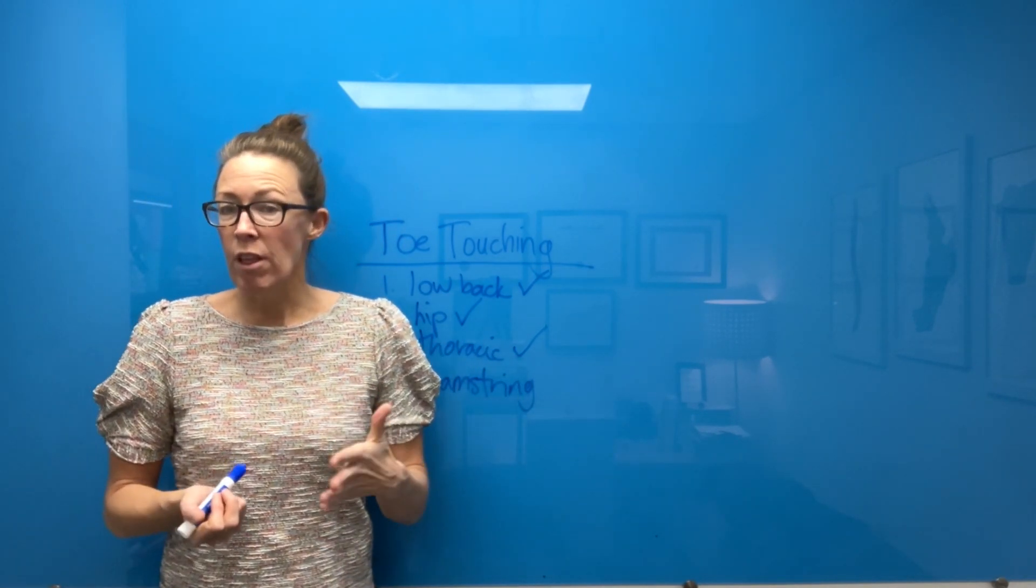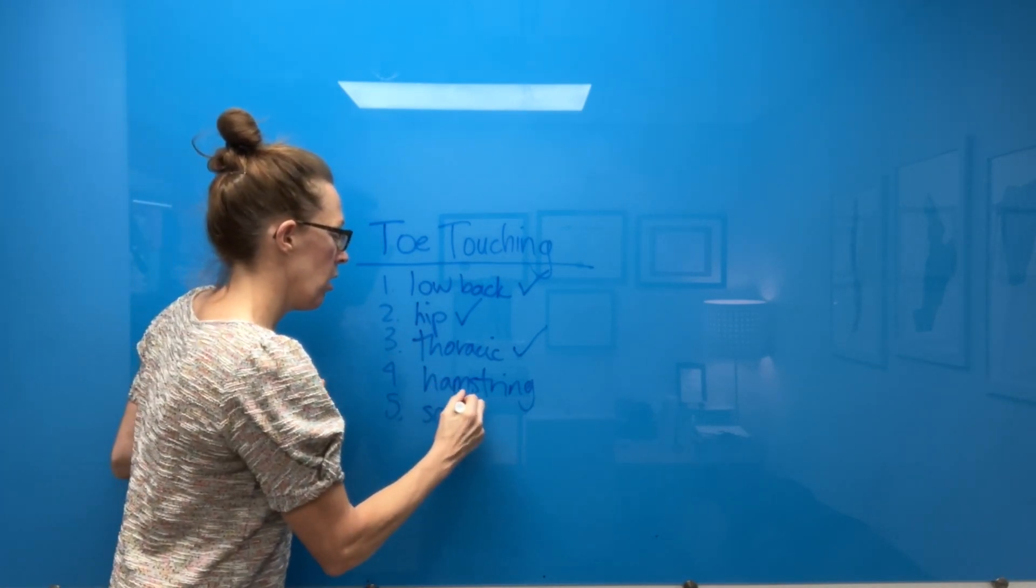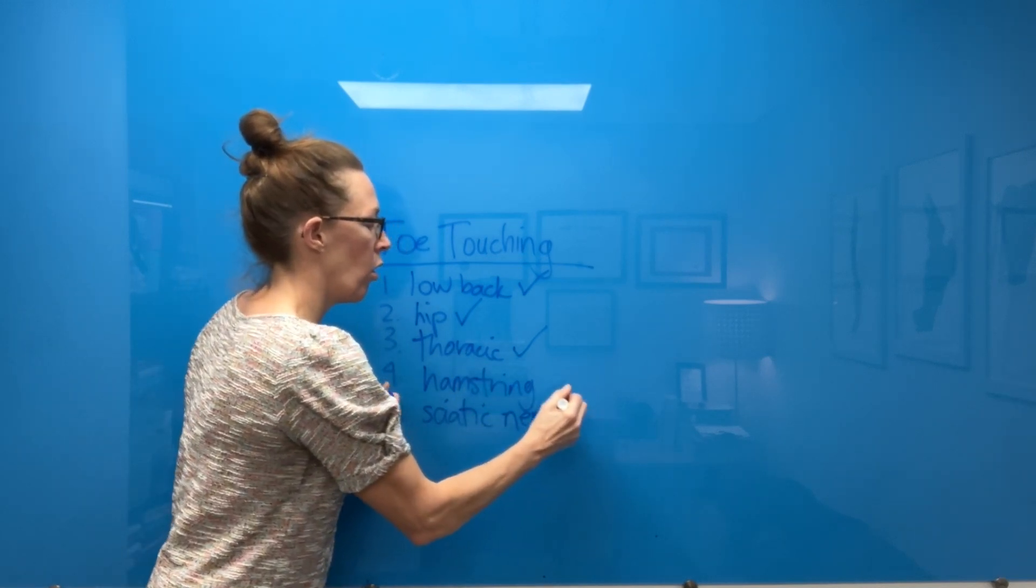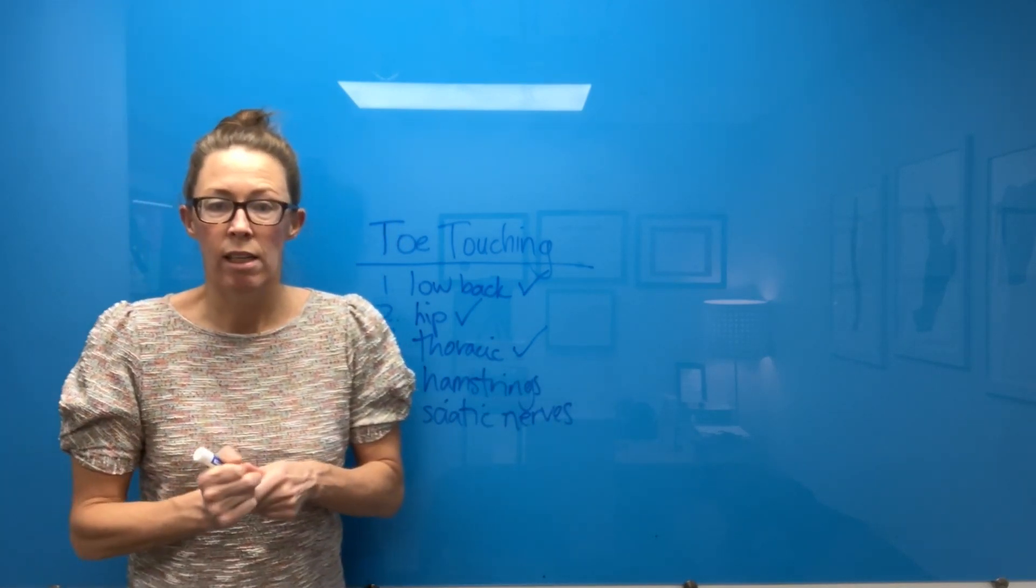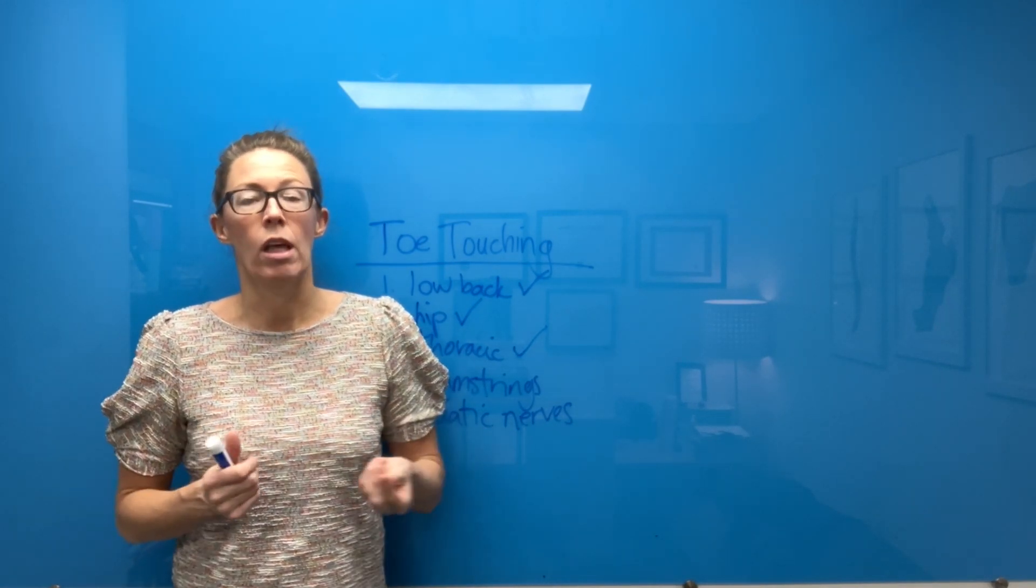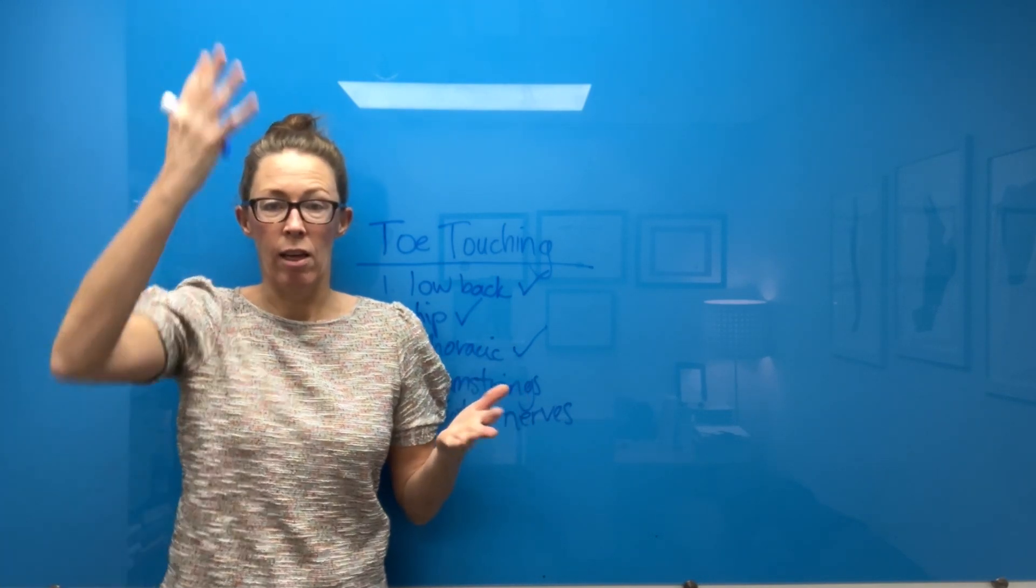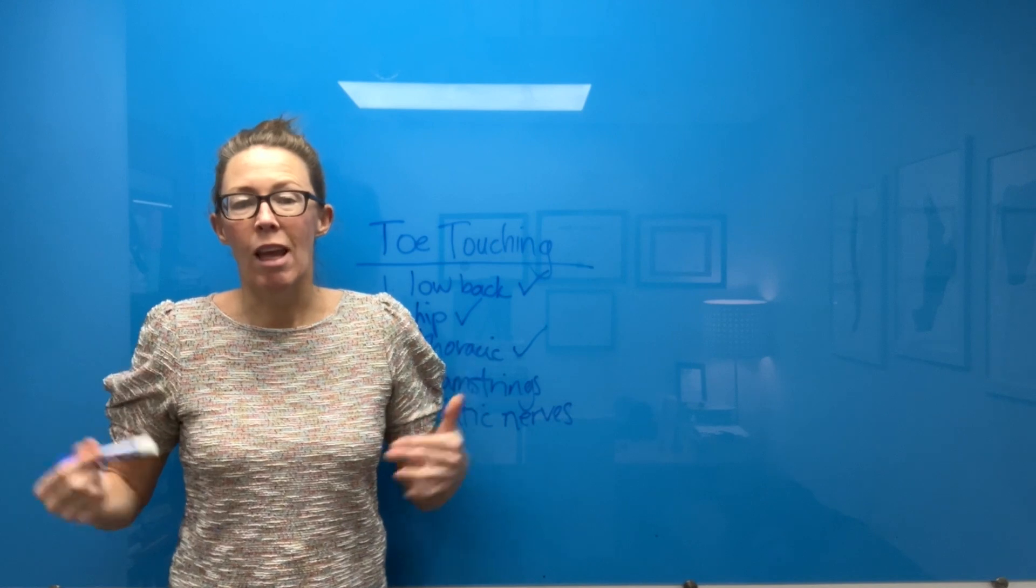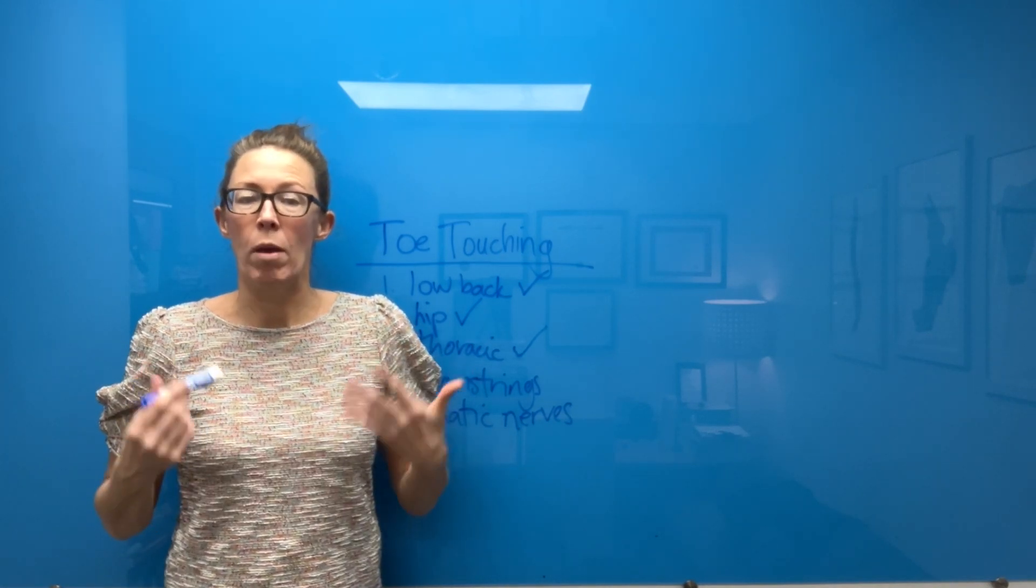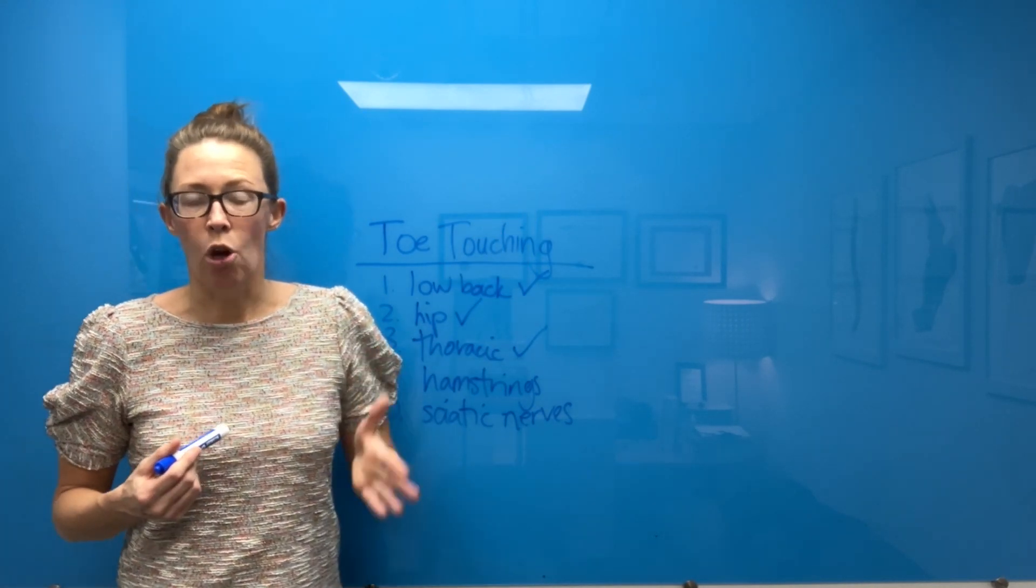But the fifth one that I think of a lot is sciatic nerve extensibility. So the sciatic nerves, there's a big one on your left and on your right, they need to be unimpeded for you to touch your toes. Just like the straight leg raise test for nerve tension on the back raises the leg perpendicular to the floor, it's the same thing as toe touching. Toe touching is in the standing position, which is weight bearing through the joints.